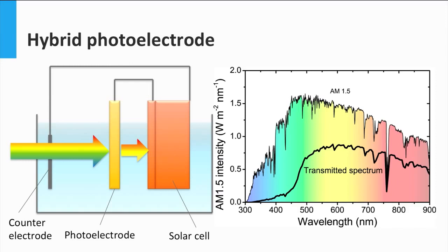The solar cell must be especially designed to function with the transmitted spectrum, since the light will have a different spectrum and intensity than the standard solar spectrum AM1.5.